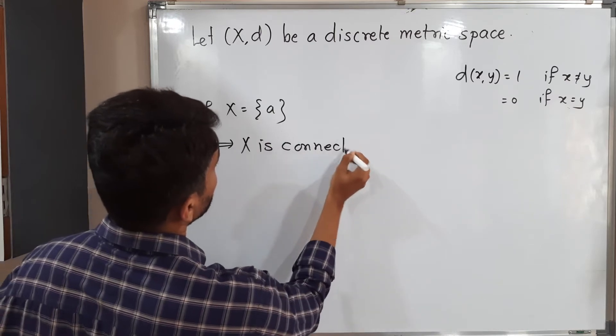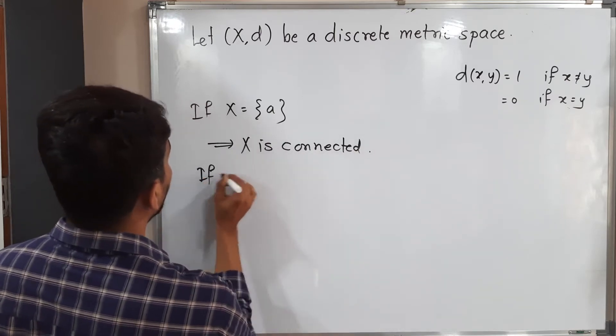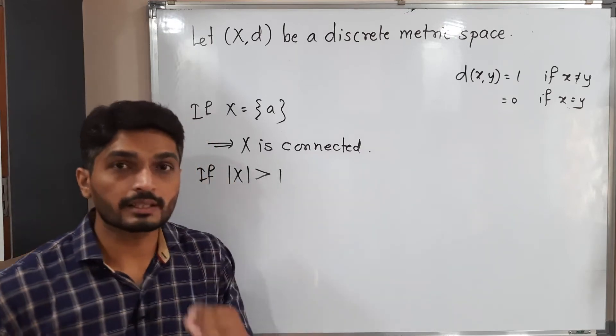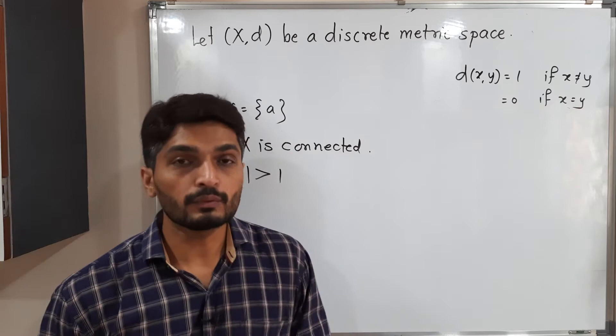Let us discuss the second case. If the cardinality of X is greater than 1, that means X contains more than one element. Then what will happen?